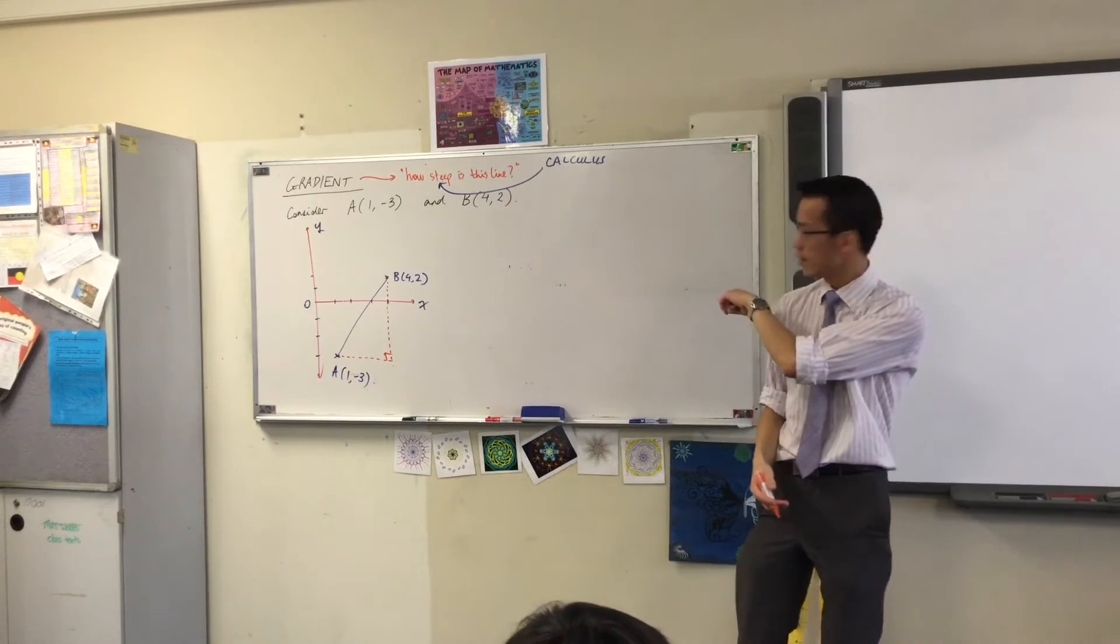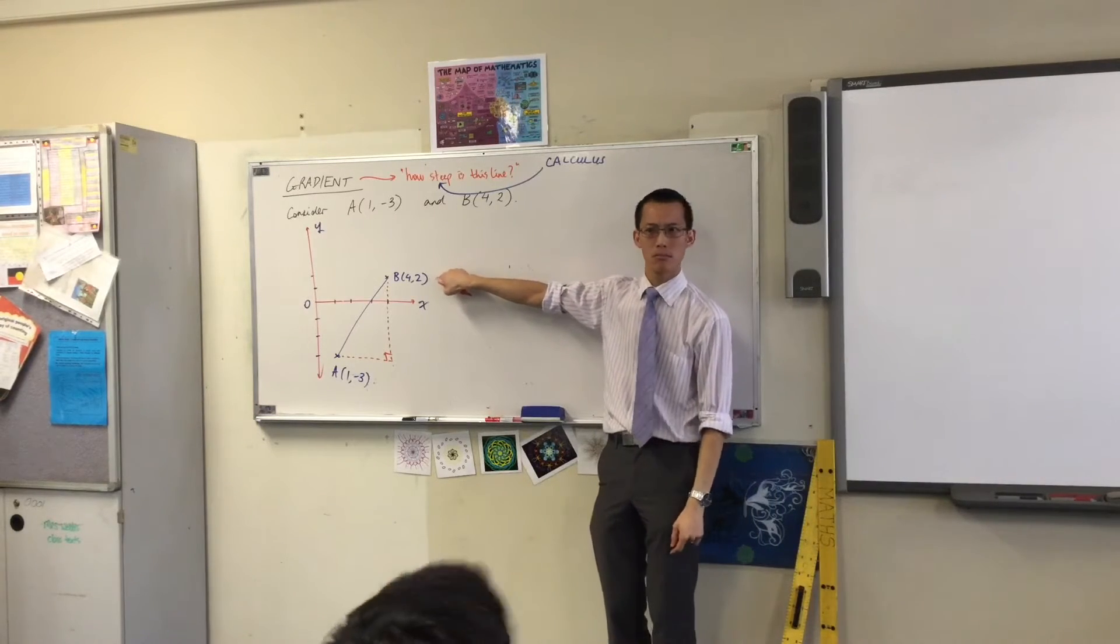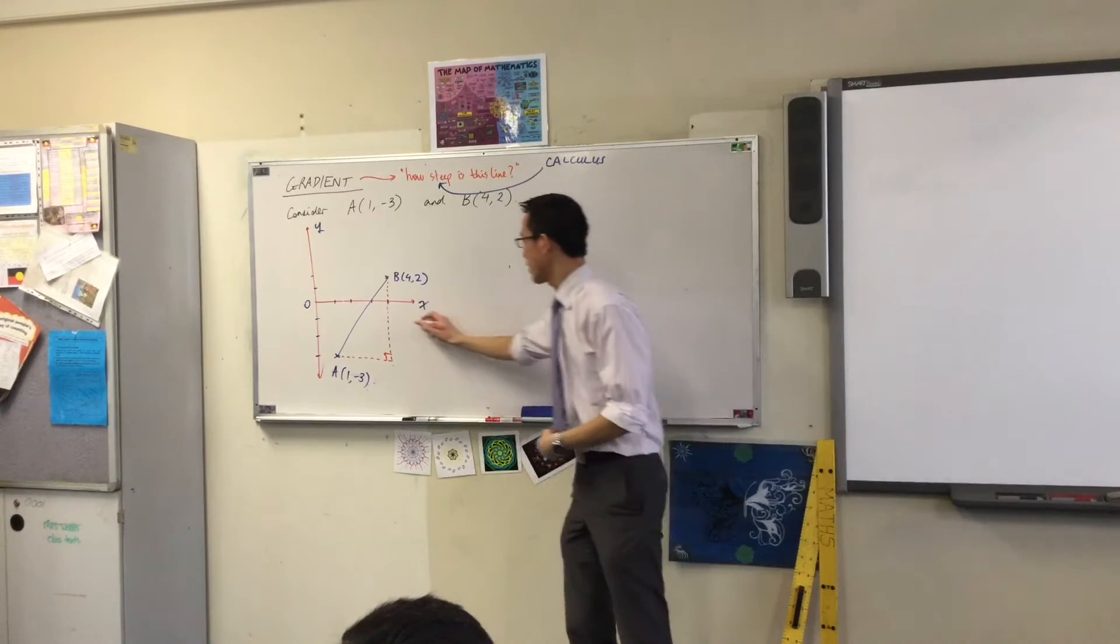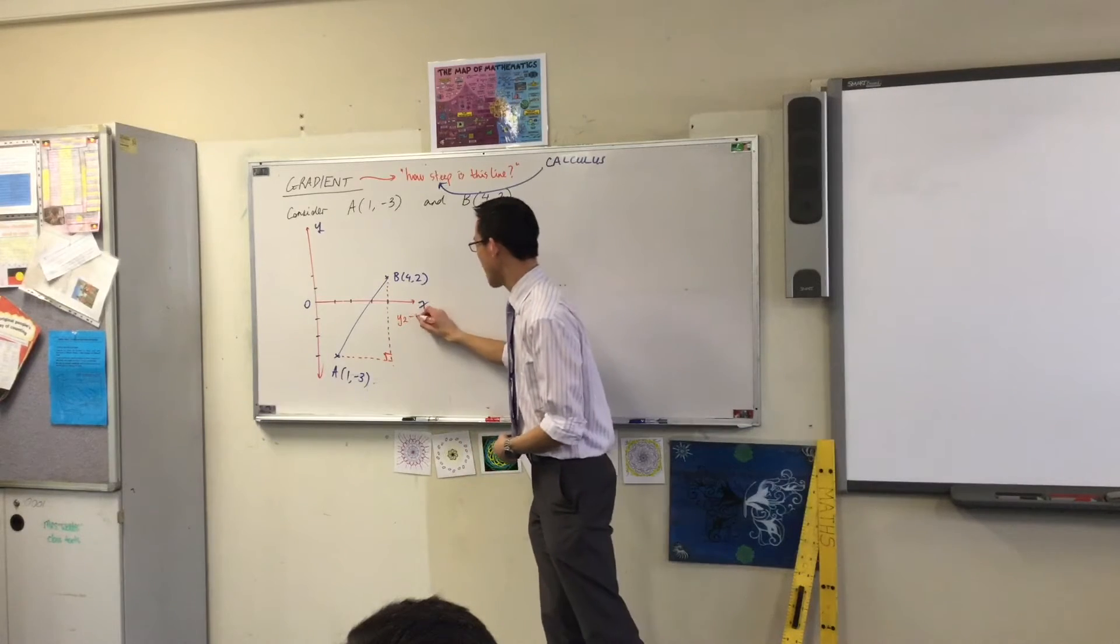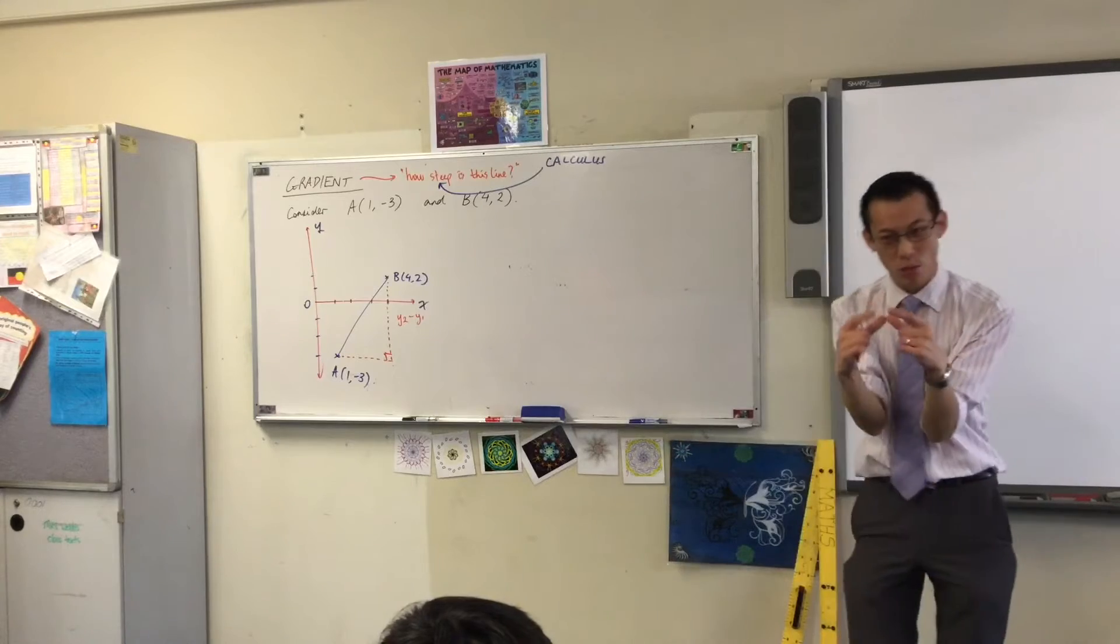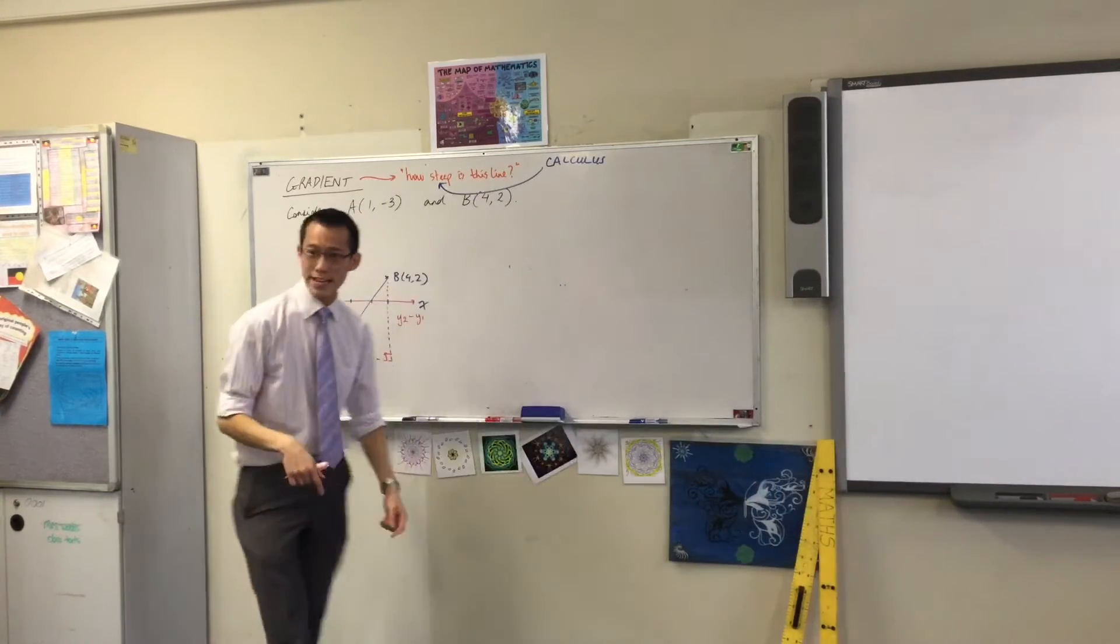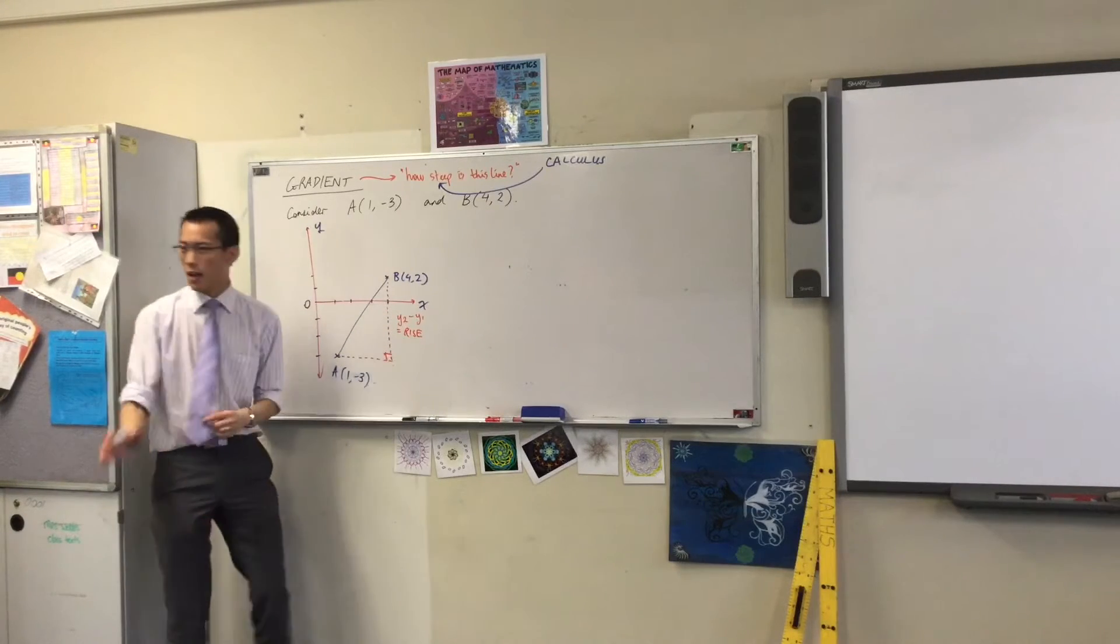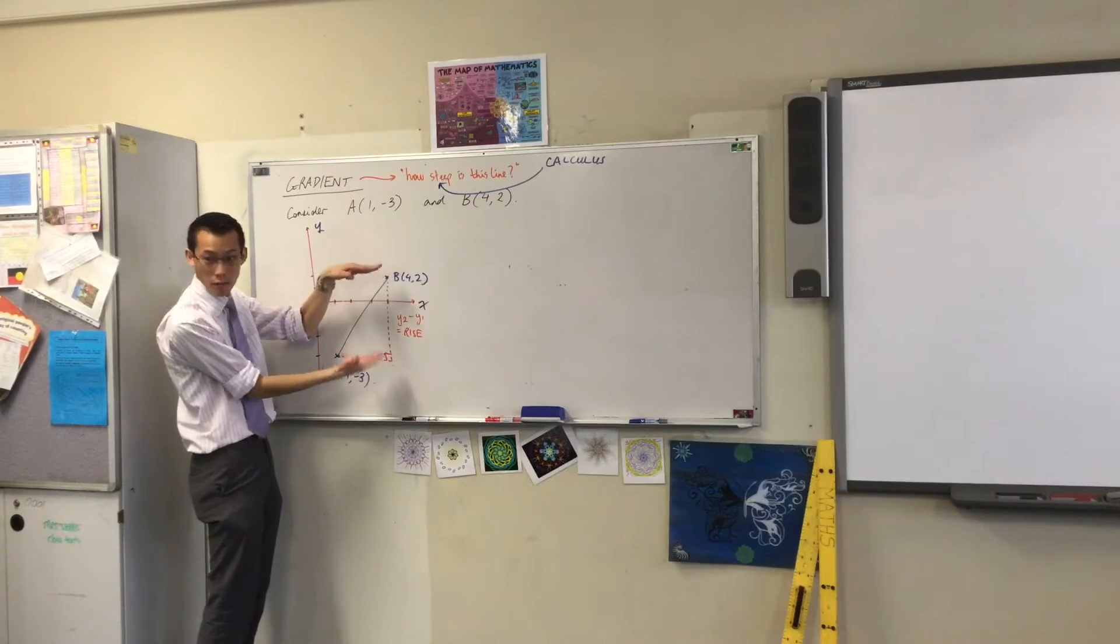It's going to be, in this case, 2 take away negative 3, which makes it 5. But more generally speaking, it's one of the y-coordinates, and you take away the other one. Do you remember it coming up inside, underneath the square root in the distance formula? Now, when we're talking about gradient, we give this guy a specific name. We call it rise. But it's the same thing. It's how far up have you gone? Rise.